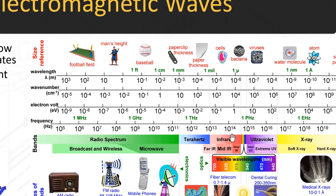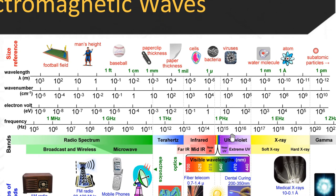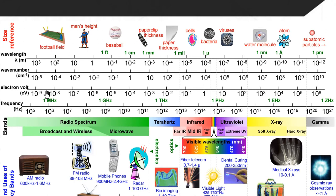On the left side of the spectrum we have very large wavelengths — low energy. Low energy waves are good for communications. AM radio operates at about 600 kHz to 1.6 MHz; FM radio is 88 to 108 MHz. These have the smallest frequencies and largest wavelengths — on the order of a football field. One full period of an AM radio wave is an entire football field.